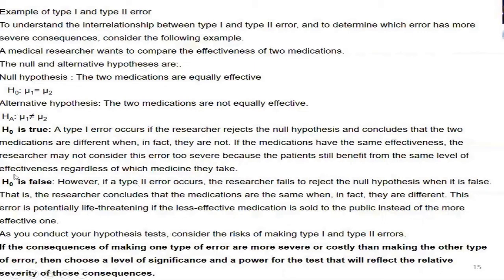Type 1 error is not severe here — the medicines are actually the same, but he says they are not, so the patient still gets the same medicine and the same benefit. But type 2 error in this case is very, very severe. So when conducting any research, first calculate type 1 and type 2 error to determine which is more severe. Then choose your level of significance and the power of the test accordingly, so that you can minimize the error. It is very important, before going to test, to choose a level of significance and the power of the test.